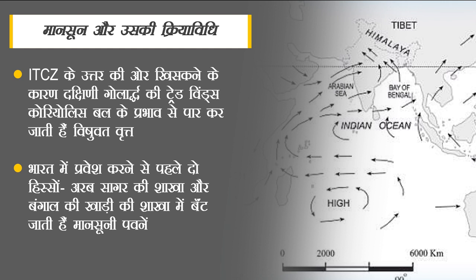अरब सागर से दक्षिण भारत में प्रवेश करने वाली पवनें आंध्रप्रदेश, कर्नाटक, महाराष्ट्र, मध्यप्रदेश और राजस्थान में बरसती हैं।